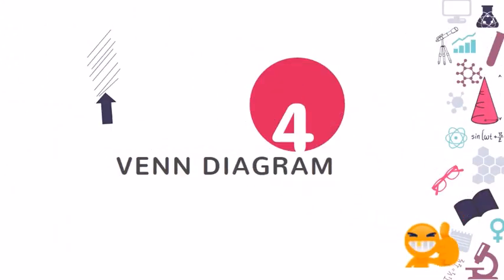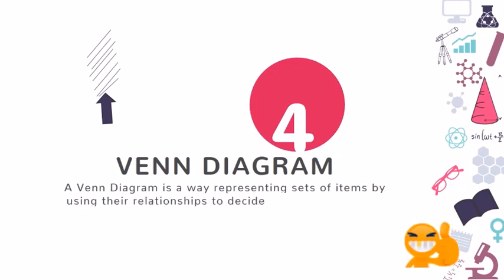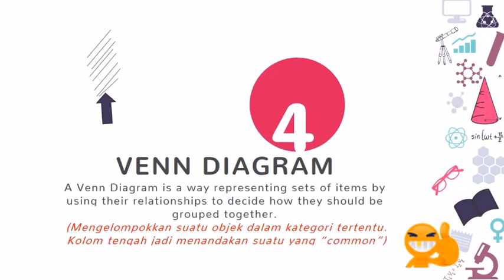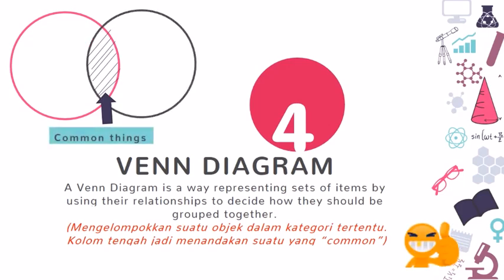Now let's move on to Venn diagram. What is Venn diagram? Venn diagram is a way representing sets of items by using their relationships to decide how they should be grouped together. Venn diagram is usually in the shape of circle or oval or rectangle, but the main thing is, there is a middle part intersecting, and these are showing the common things. Are you ready to know what is Venn diagram? Let's take a look.